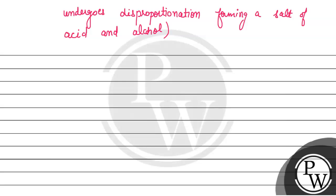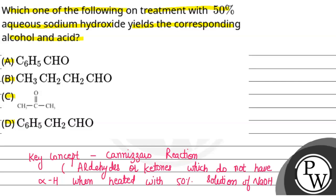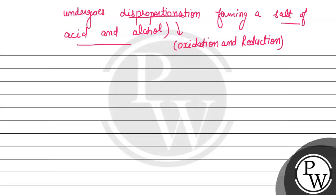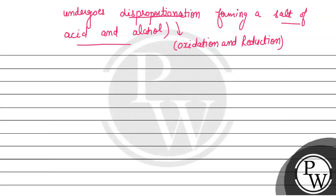Basically, in the Cannizzaro reaction, the aldehyde or ketone does not have an alpha hydrogen present. So when it reacts with base, disproportionation occurs — meaning both oxidation and reduction take place simultaneously. One compound gets oxidized and another gets reduced, forming acid and alcohol. So we need to check which given option has no alpha hydrogen.